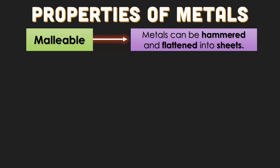When we look at metals, metals are what we call malleable. Malleable means that metals can be hammered or flattened into what we call sheets — like a sheet of paper, you can have a sheet of metal.